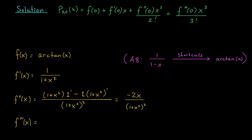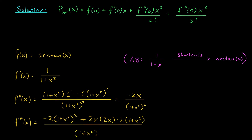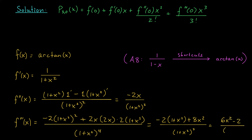For the third derivative, I apply the quotient rule one more time: low d high minus high d low, square the bottom. Low d high gives minus 2 times (1 plus x squared) squared, minus high d low, which is plus 2x times the chain rule on the denominator: 2x times 2(1 plus x squared). Every term in the numerator has a factor of (1 plus x squared), so I cancel one from the denominator, leaving minus 2(1 plus x squared) plus 8x squared, divided by (1 plus x squared) cubed. Simplified, that's (6x squared minus 2) over (1 plus x squared) cubed.